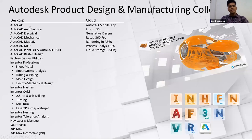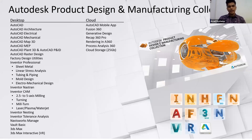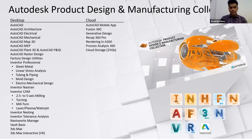This is about the PDMC collection. Autodesk has three collections: the first is PDMC collection, the second is AEC collection, and the last is MNE collection. In PDMC collection, we have AutoCAD, AutoCAD Architecture, AutoCAD Electrical, AutoCAD Mechanical, AutoCAD Map 3D, AutoCAD MEP, AutoCAD Plant 3D, AutoCAD P&ID, and AutoCAD Raster Design — these are the seven AutoCAD toolsets.